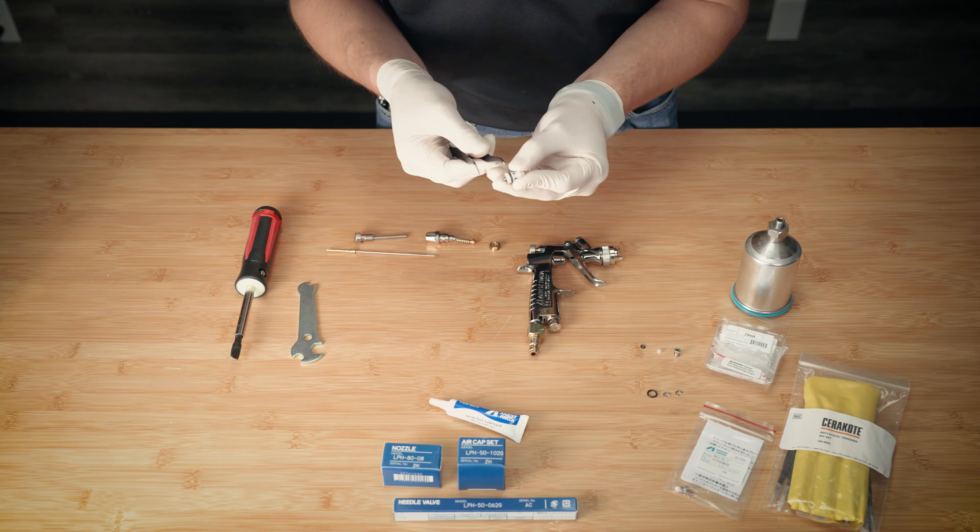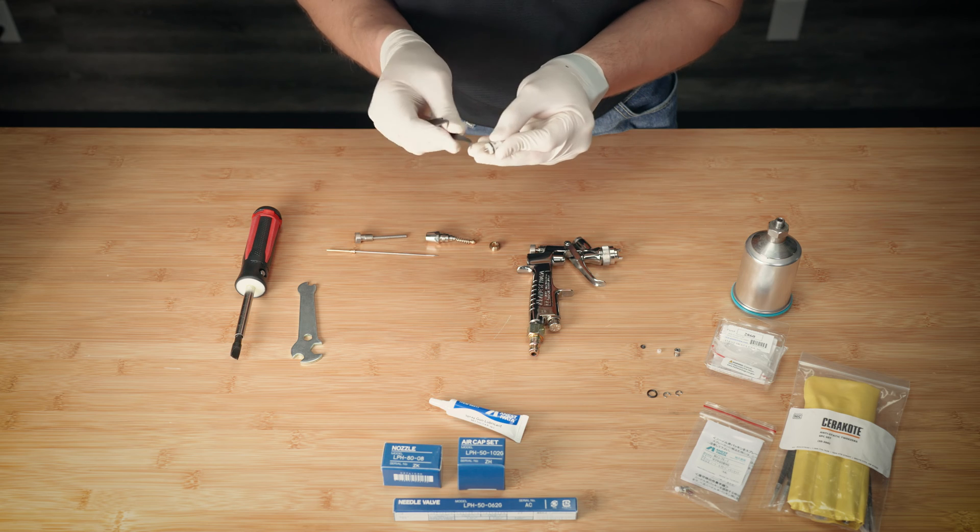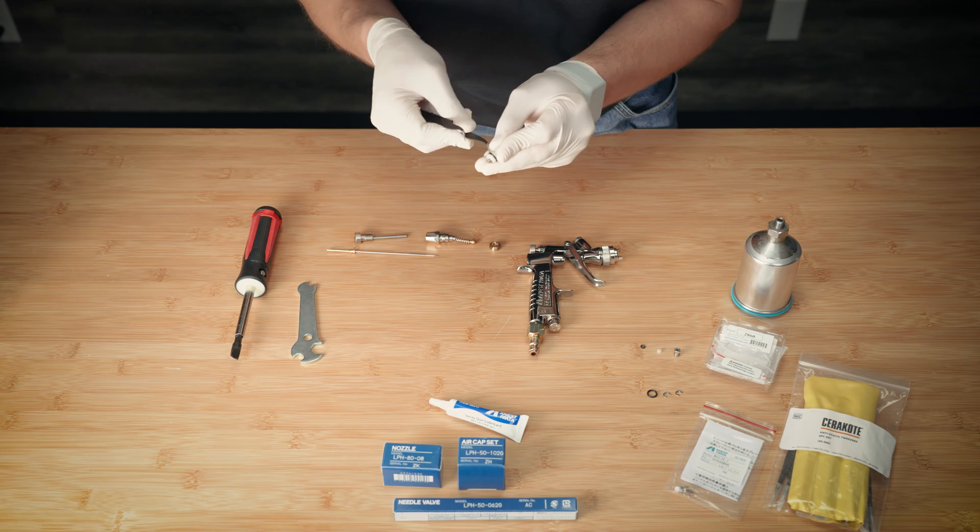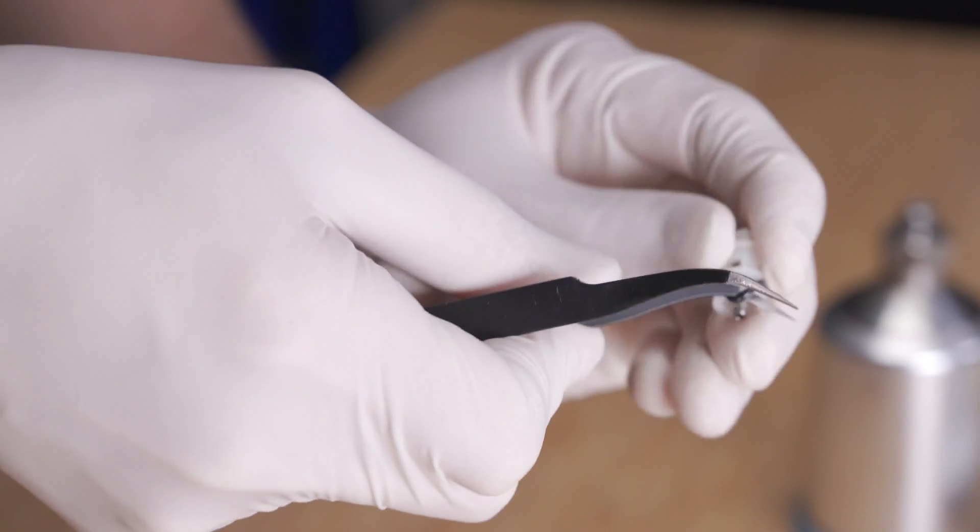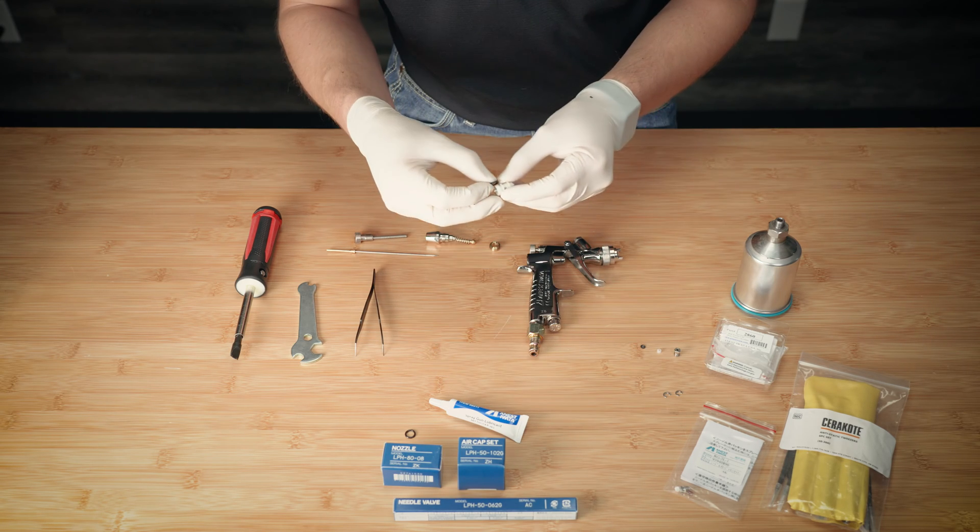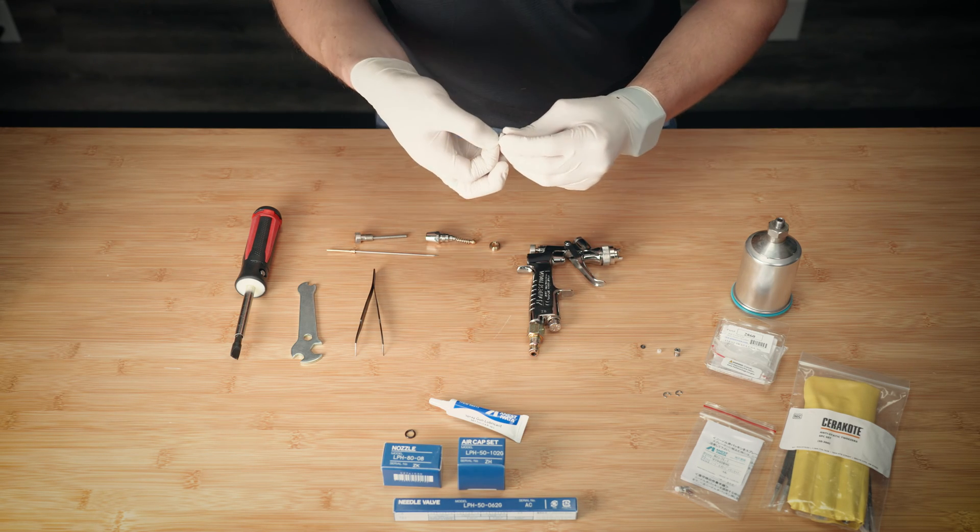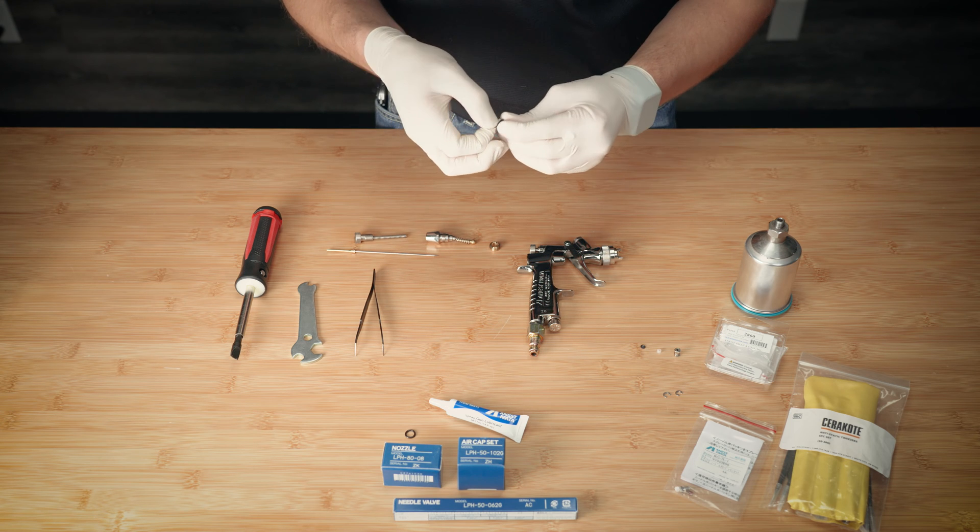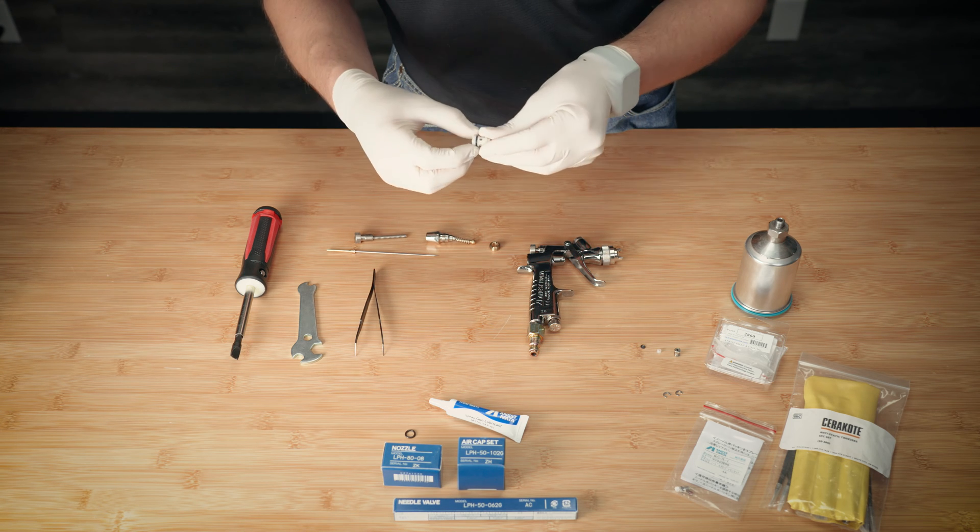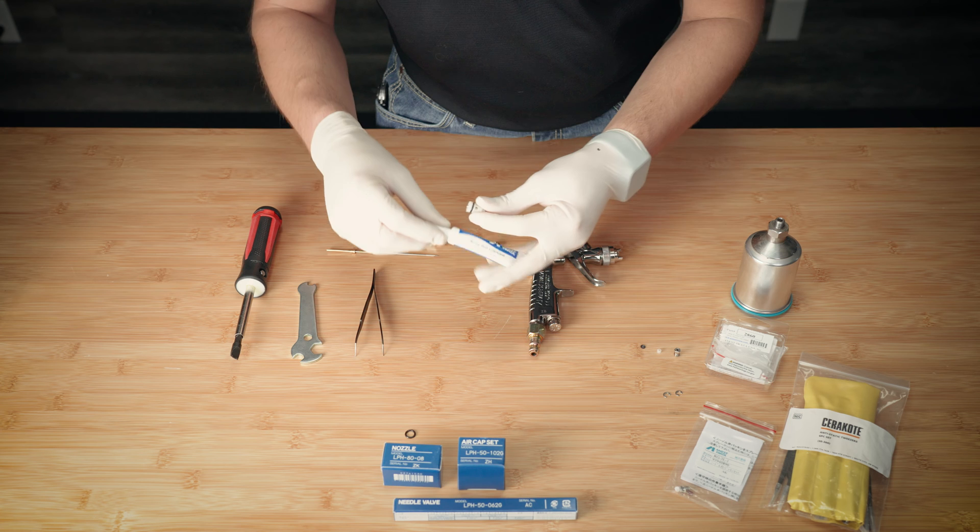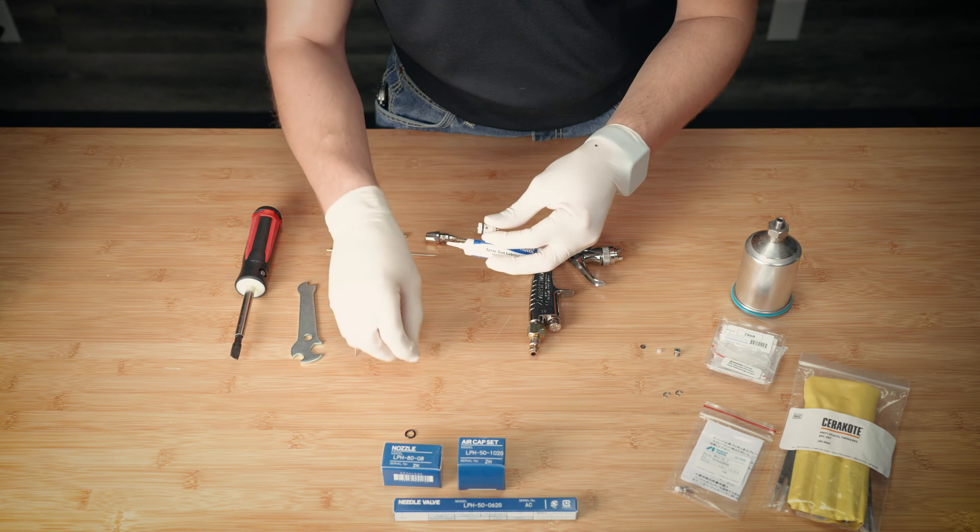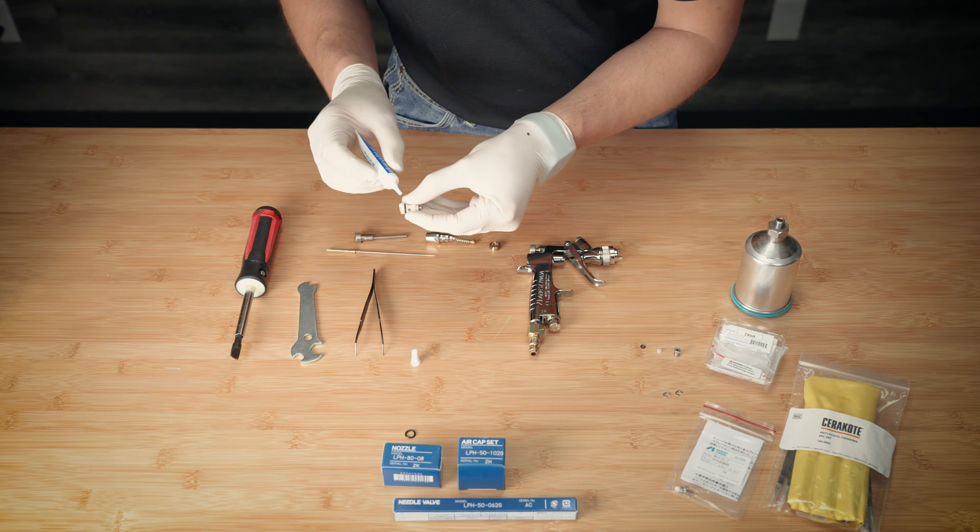Next, remove the old O-ring from the air valve. Be careful not to poke yourself with the tweezers. Slide the new O-ring on the end of the valve, and apply one drop of the Iwata spray gun lubricant. Be careful not to over-oil.